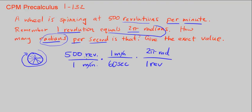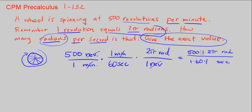If we multiply these across, this cancels out as well. So we're left with 500 times 1 times 2 pi, and our units in the numerator are radians. In the denominator, we have 1 times 60 times 1, and our units are seconds. They say give the exact value. That means don't put this in your calculator and approximate it. 500 times 2 is 1,000, so we get 1,000 pi over 60 radians per second.